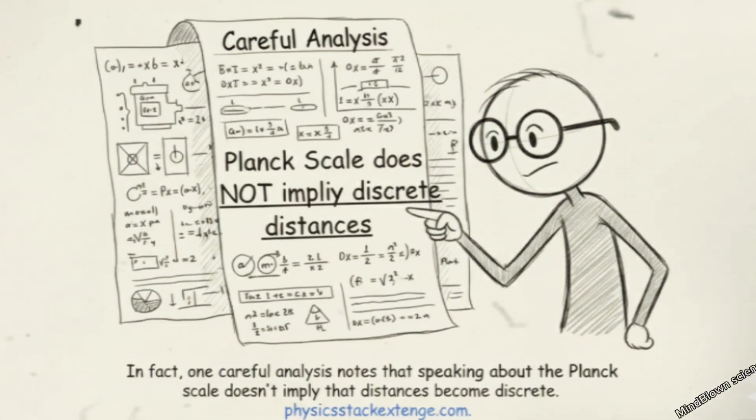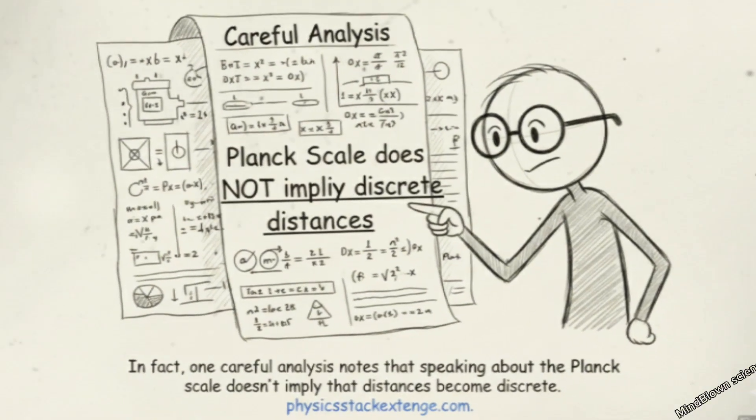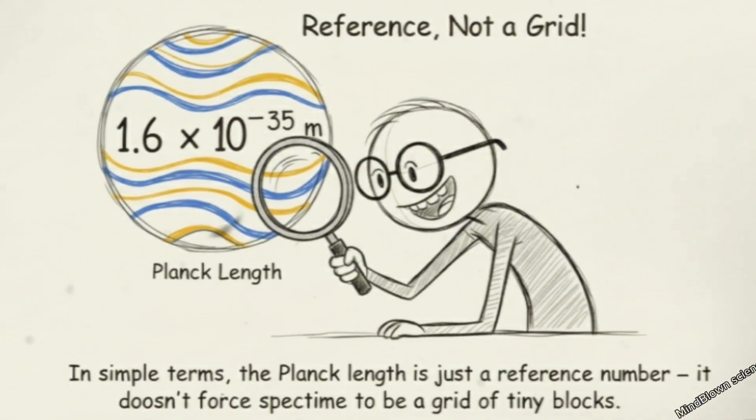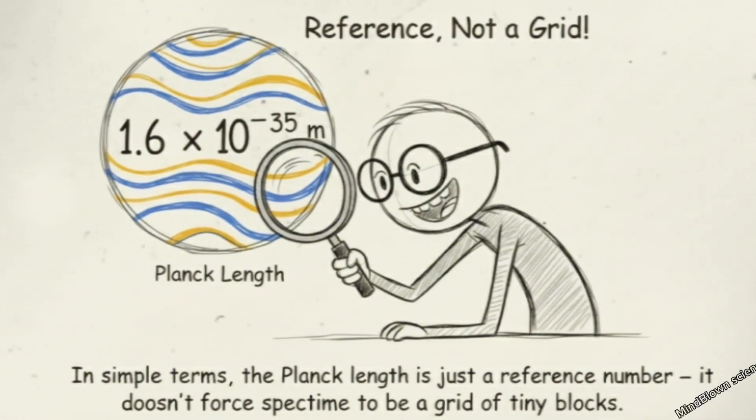One careful analysis notes that speaking about the Planck scale doesn't imply that distances become discrete. In simple terms, the Planck length is just a reference number. It doesn't force spacetime to be a grid of tiny blocks.